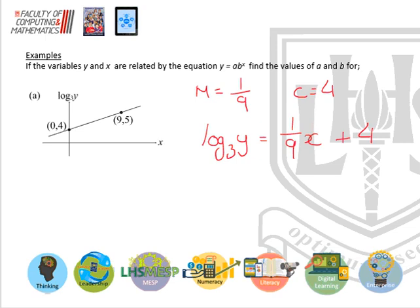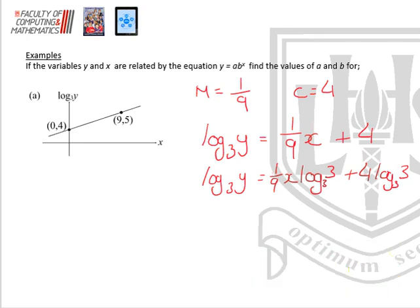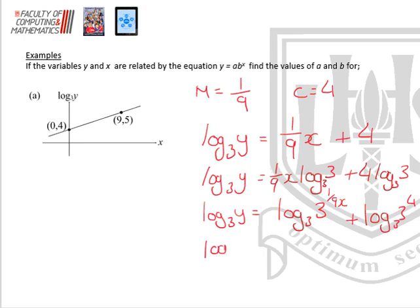A little bit of a difference here: we've got two things that don't have a log involved. So we're going to introduce logs to both. Log y to the base 3 equals a ninth x times log 3 to the base 3, plus 4 log 3 to the base 3. Powers fly up: log to the base 3 of 3 to the power of a ninth x, plus log to the base 3 of 3 to the power 4. Adding two logs means multiply: 3 to the power 4 is 81, so log to the base 3 of 81 times 3 to the power of the ninth of x.